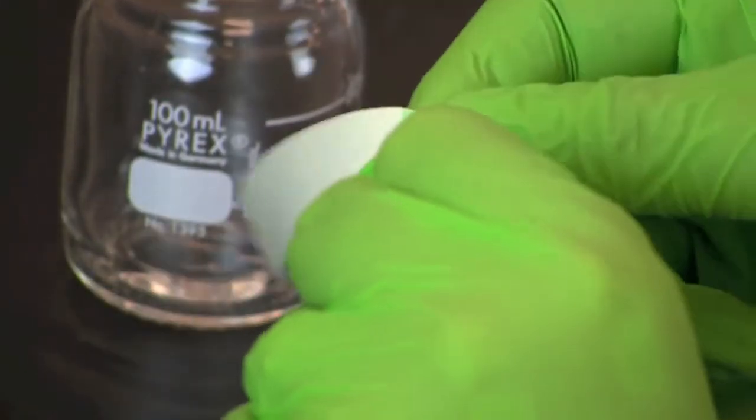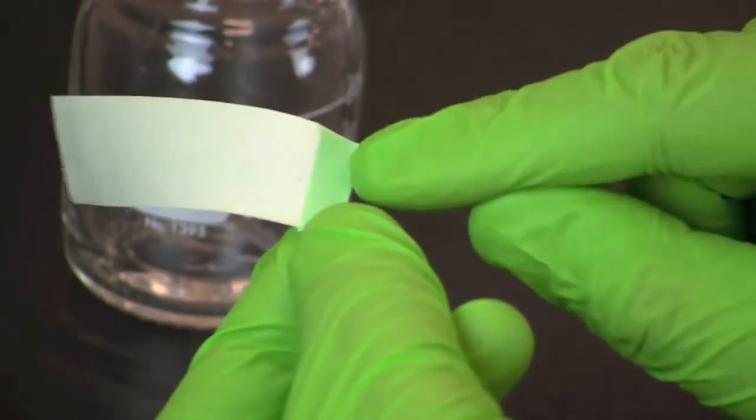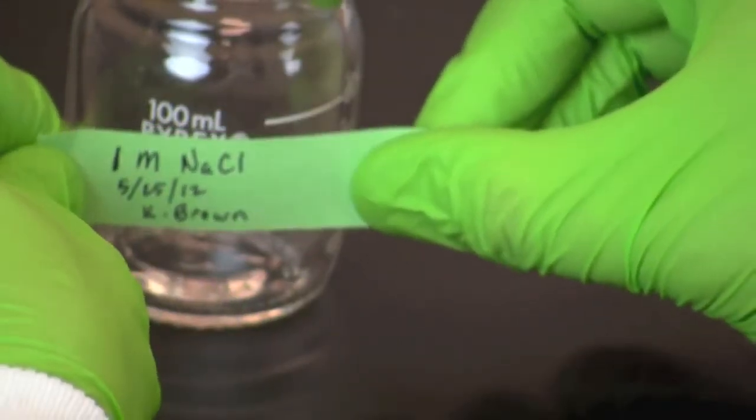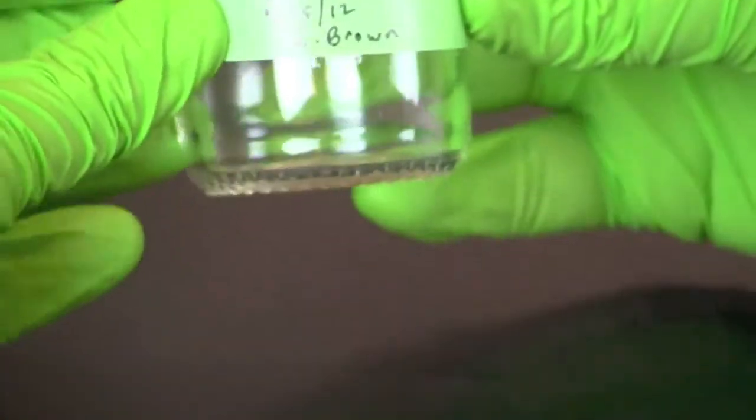Folding the side of the label will make it easier to remove the label at a later date. Place the label firmly onto the reagent bottle.